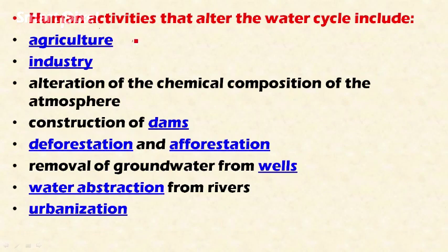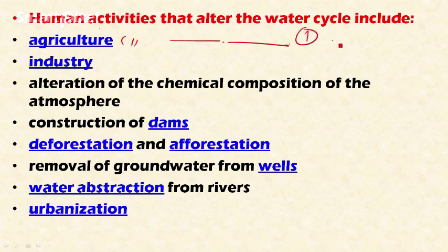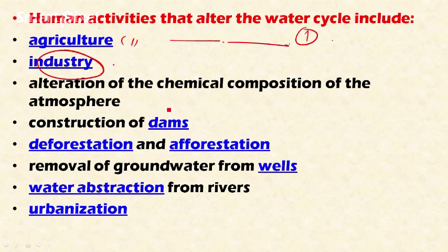Certain human activities are altering the water cycle. Agriculture draws water from groundwater and surface water sources, altering groundwater storage because we are drawing more and more water while natural infiltration is much less compared to groundwater discharge. Industry is also utilizing a lot of water, further altering the water cycle. We are also obstructing the flow of water, which is another form of interference.